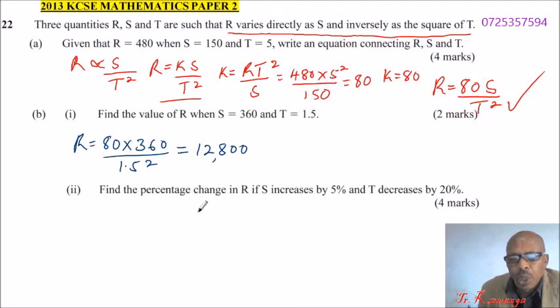Number two, we are told find the percentage change in R if S increases by 5% and T decreases by 20%. We can say the new R, R prime, equals K times S has increased by 5%, so it is 1.05 of the old S.